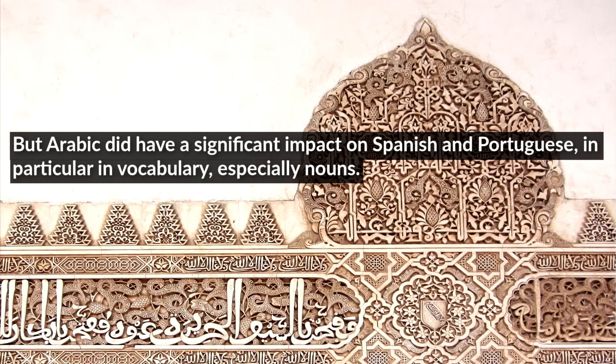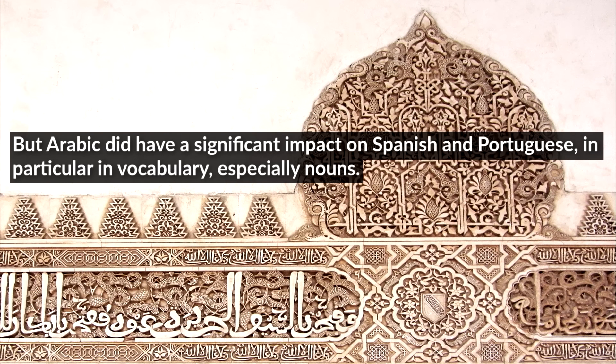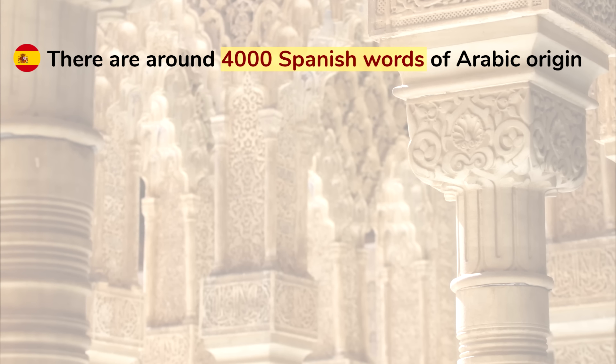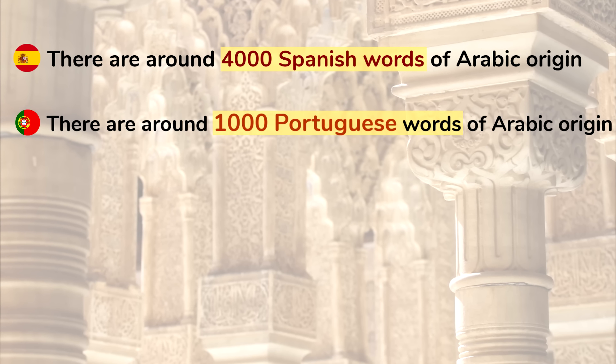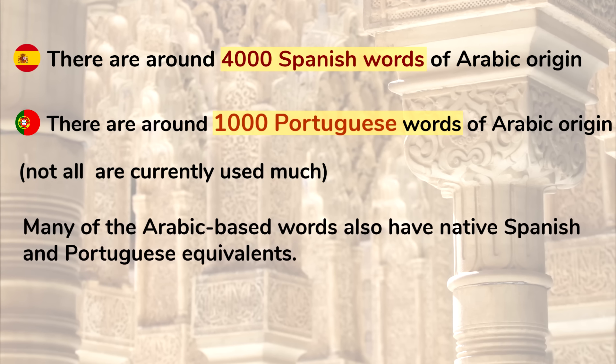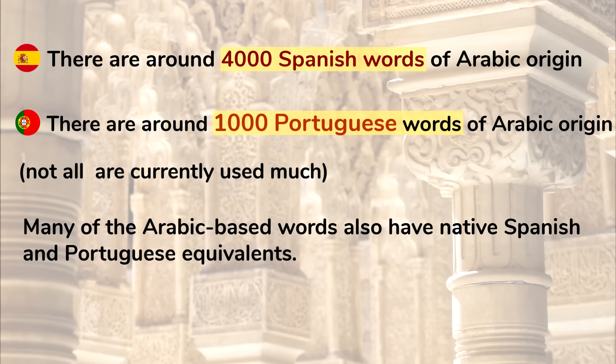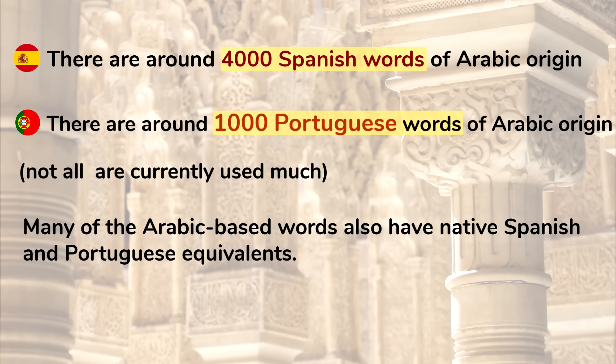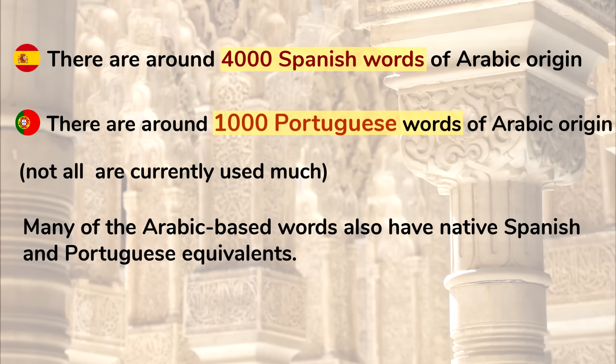So Arabic didn't have that much of a chance to gain a permanent foothold. But it did have a significant impact on Spanish and Portuguese, in particular in vocabulary, especially nouns. Spanish and Portuguese were both influenced in similar ways, and in many cases they borrowed the same vocabulary from Arabic. But because parts of Spain were under Muslim control much longer than Portugal, there was more Arabic influence on Spanish. Most sources say there are around 4,000 Spanish words of Arabic origin, and around 1,000 Portuguese words of Arabic origin, though a lot of these have fallen out of use. It's also important to note that many of the Arabic-based words also have native Spanish and Portuguese equivalents, which might be used in different contexts or with different shades of meaning.